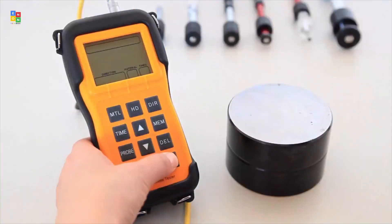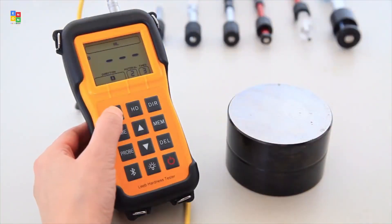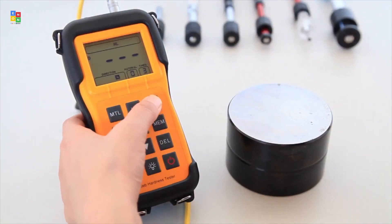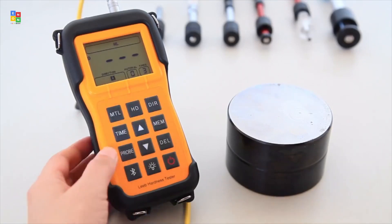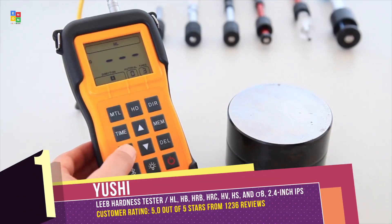Yushi LM500, a Lieb Hardness Tester with a 2.4-inch IPS display, offering precise measurements in various hardness scales like HL, HB, HRB, HRC, HV, HS, and SB.